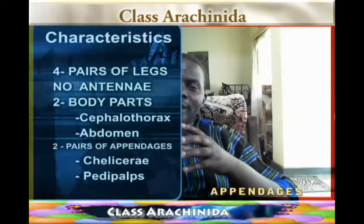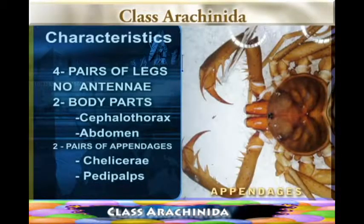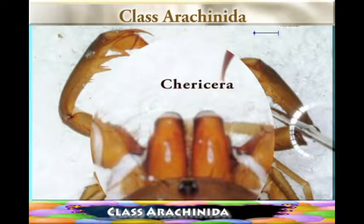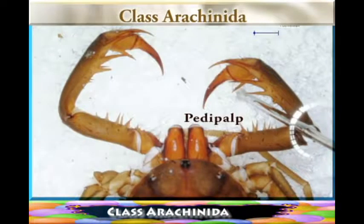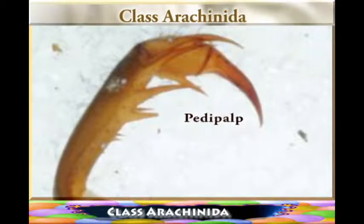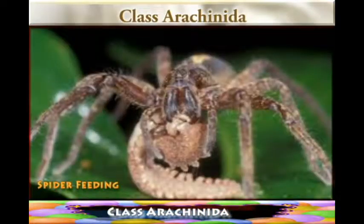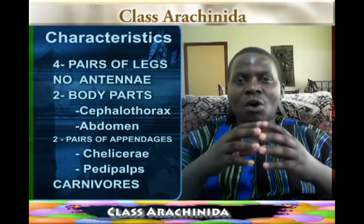Looking at their bodies, they have two pairs of appendages. One is the chelicerae and the other is the pedipalps. Those are the two pairs of appendages that they have. They are also carnivorous animals, meaning that they feed on other living organisms.